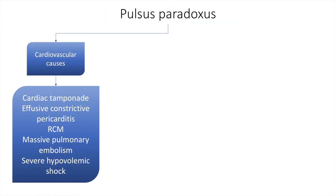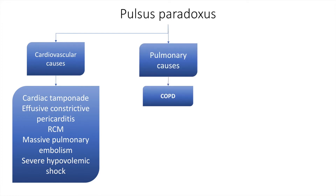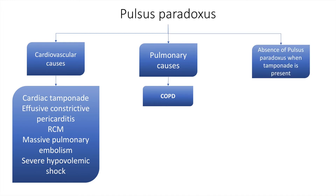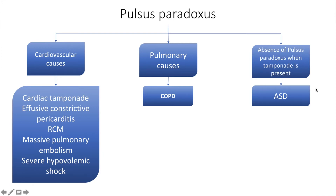Pulsus paradoxus may be because of cardiovascular causes such as tamponade and effusive constrictive pericarditis, restrictive cardiomyopathy, massive pulmonary embolism, and severe hypovolemic shock. Pulmonary causes include chronic obstructive pulmonary disease. Notably, absence of pulsus paradoxus when tamponade is present is seen in atrial septal defect, because the septal defect equalizes pressures on both sides.